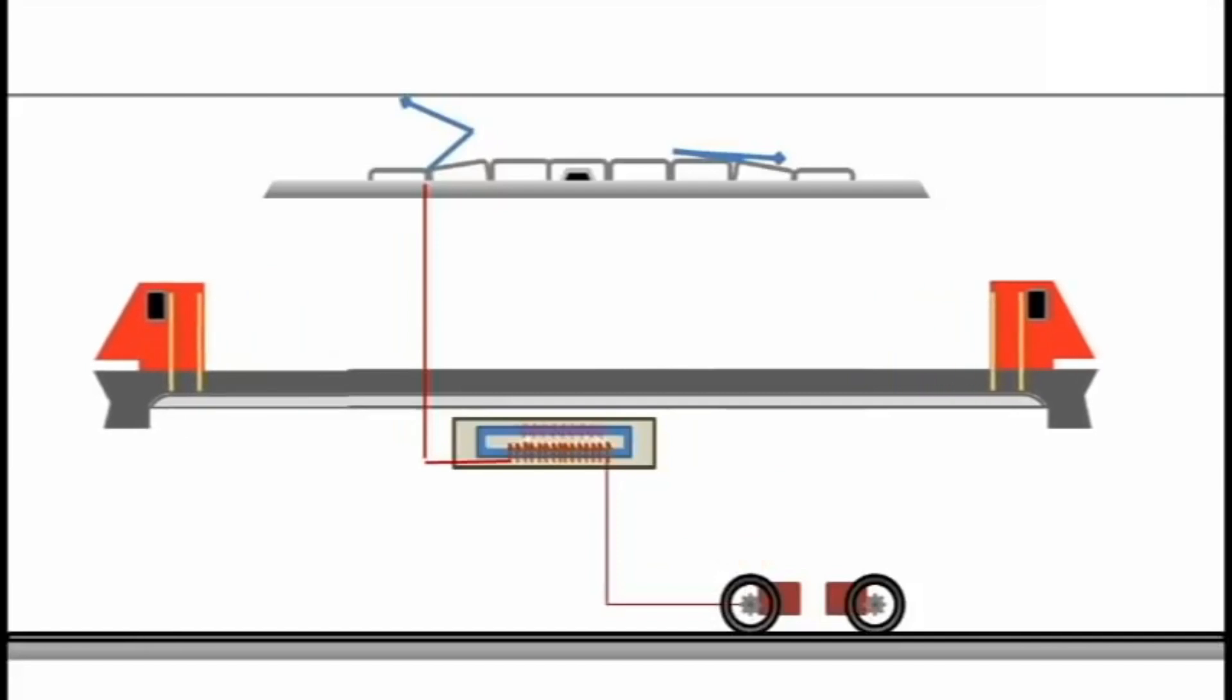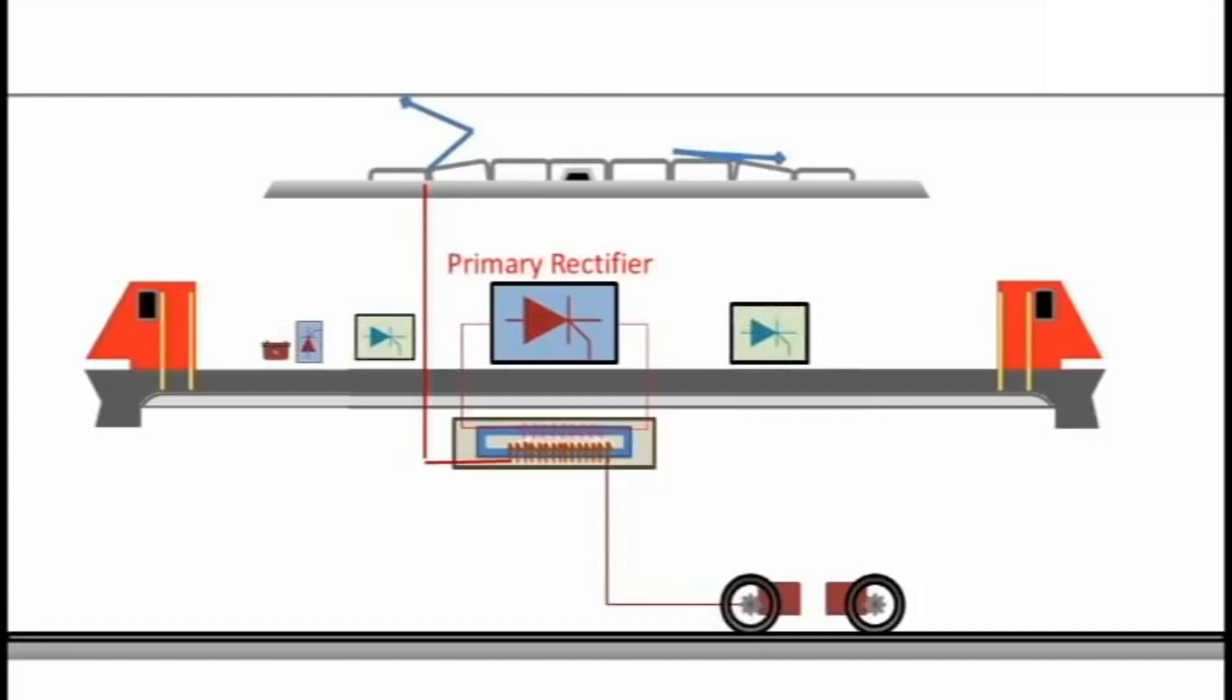From the transformer, the alternating current drawn from the overhead wires is transferred to a main rectifier which converts it to direct current. The main and auxiliary inverters then convert the direct current into three-phase alternating current.